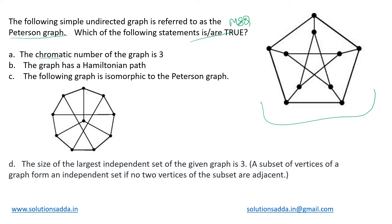The first statement says that the chromatic number of the graph is 3, which means we can paint this graph with a minimum of 3 colors. If we paint this node red, then its 3 adjacent nodes cannot be red. This one, this one, and this one can also be red. Now let us change the color — painting some nodes green, and the remaining two will be painted blue. So yes, we could paint all the nodes of this graph in just 3 colors, confirming the chromatic number is 3.